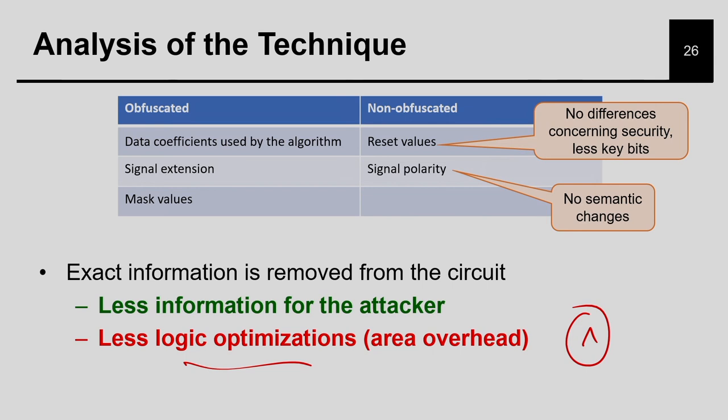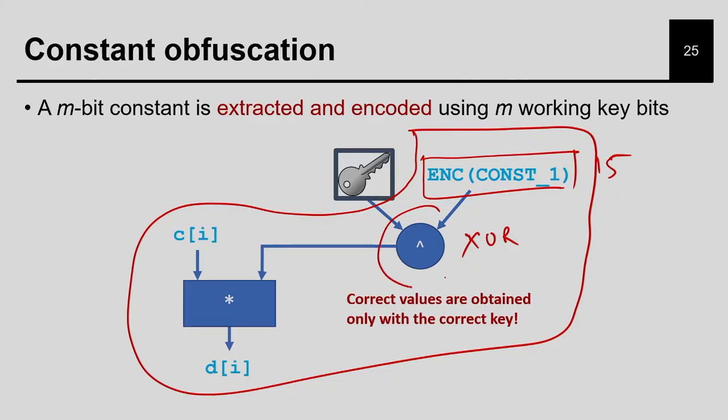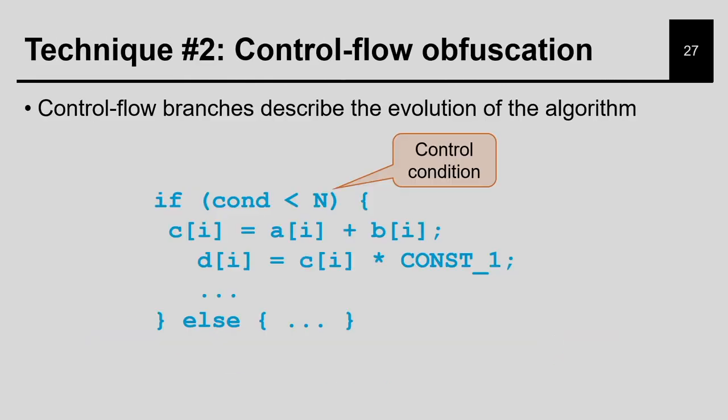You can have just 2 to the power 320 possible values just by locking 10 constants, and in a given program we usually have many such constants. Locking those constants with 32 bits each generates a huge key size. And the overhead here is only a XOR gate, so the area overhead is very less.